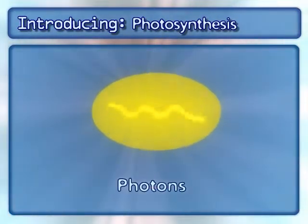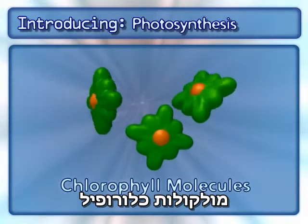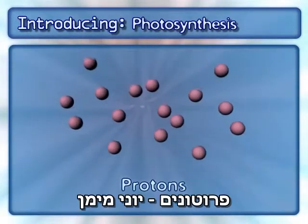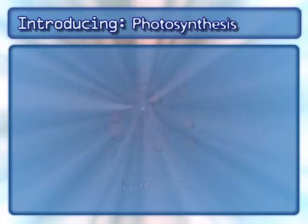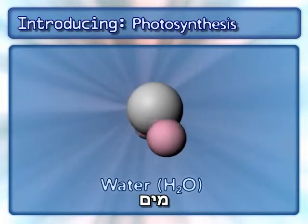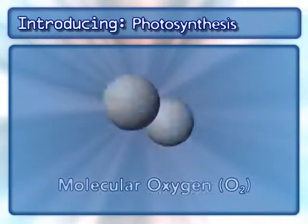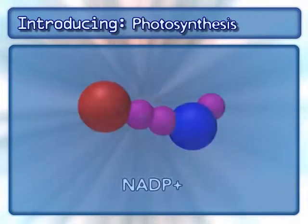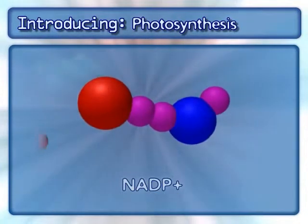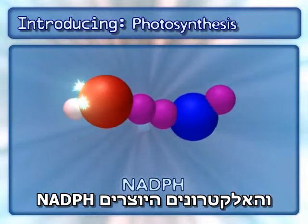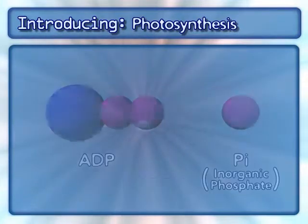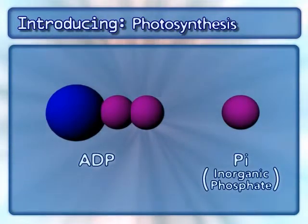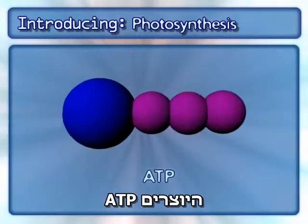Other key components include photons, chlorophyll molecules, protons, water, molecular oxygen, proton and NADP and the electrons to form NADPH, and ADP and PI, which combine to form ATP.